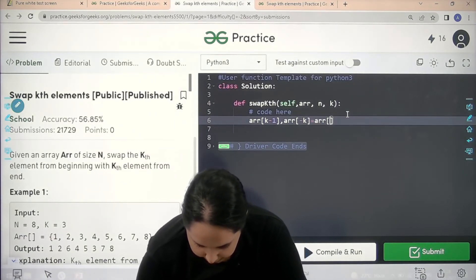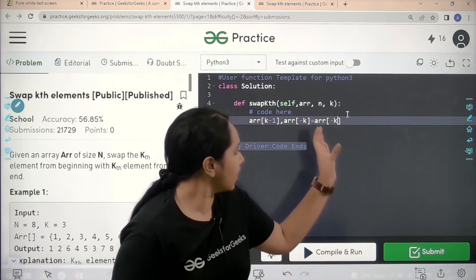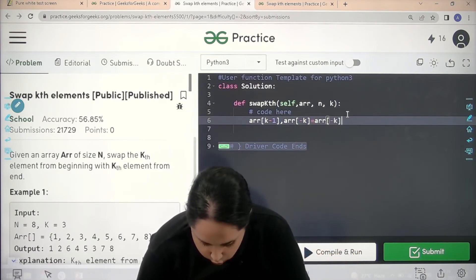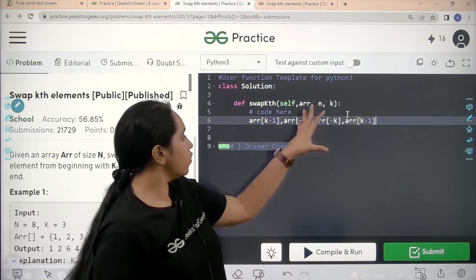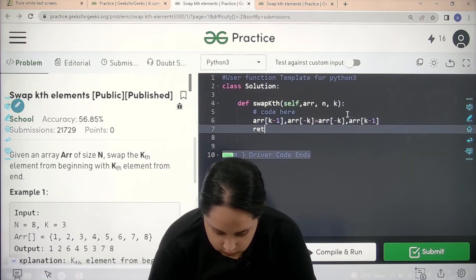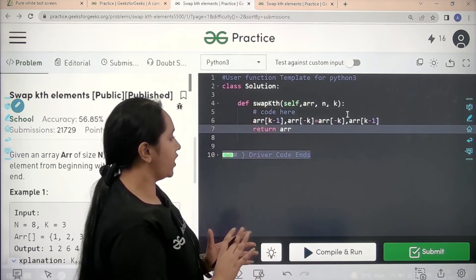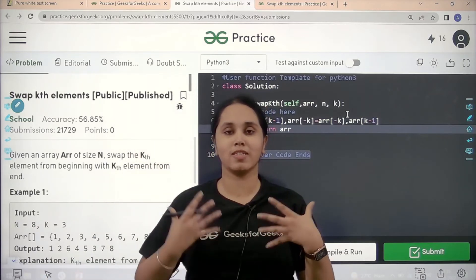Then I just need to write equal to and in equal to I would write array square brackets minus k because I want them swapped. Comma array of k minus 1. So I hope this is clear to you. Now I will just directly return with my array. So this is how you do the question but now we need to check if it is correct or not.